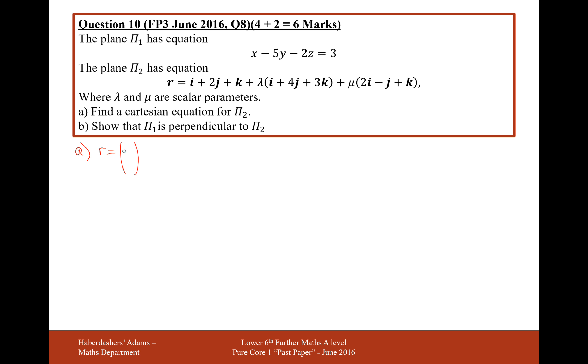Okay, so what we're going to do first is put the second equation of a plane into column vectors. We can a bit more clearly see what's going on here. What we can create to get this Cartesian form for π2 is three equations using the variables for x, y and z. The x-coordinate on this plane is calculated by doing 1 plus 1λ plus 2μ. The y variable is 2 plus 4λ minus μ. And the z variable is 1 plus 3λ plus μ.